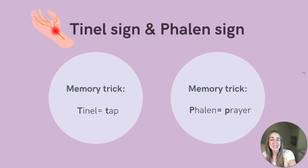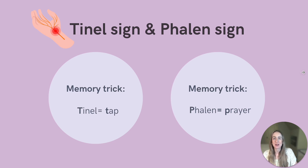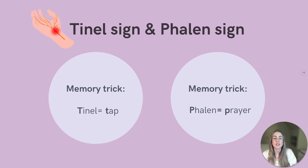There are two different assessment tests for this condition: the Tinel sign and the Phalen sign. I like to remember the Tinel sign by thinking of tapping the inner wrist, because this test is performed by tapping over the median nerve to elicit symptoms — Tinel and tap both start with the letter T, which makes this easy to remember. The Phalen sign is performed by asking the patient to hold their hands in a reverse prayer position for about 60 seconds — Phalen and prayer both start with the letter P. This position compresses the median nerve and can recreate symptoms.